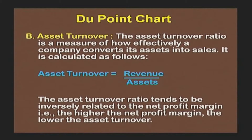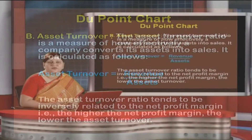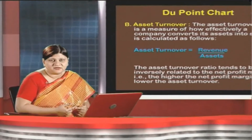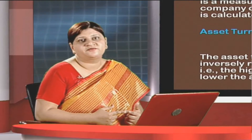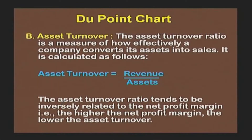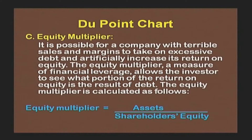Asset turnover is another component under the DuPont chart. As the name suggests, it is a ratio which measures how effectively a company converts its assets into sales. It is calculated as: asset turnover = revenue divided by assets, because we are transforming assets into sales, by which we can generate income. One key premise to keep in mind is that asset turnover tends to be inversely related to the net profit margin — the higher the net profit margin, the lower the asset turnover.